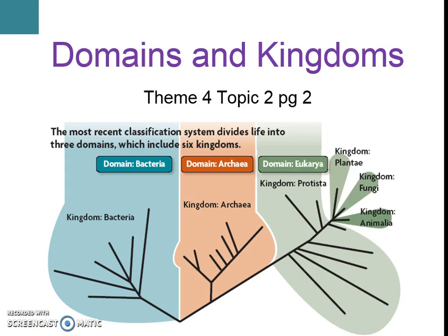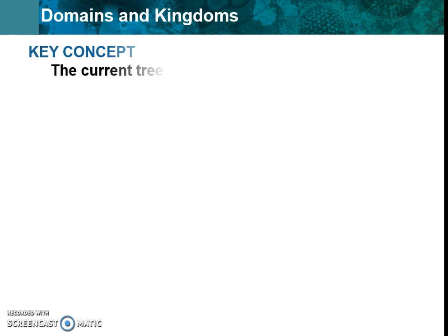Hello biology students. Today we're going to be talking about the domains and kingdoms — those big taxa categories that we started to learn about. So overall, throughout this we're going to be thinking about this key idea: the current tree of life has three major domains or big categories, and right underneath those three domains are the kingdoms. We're just going to be doing an overview today and we're going to be learning about all of these in a lot more detail throughout class.